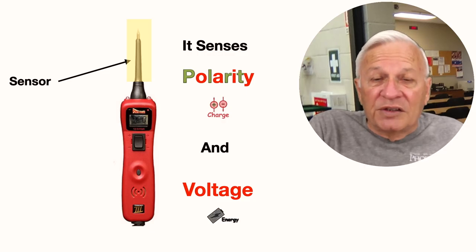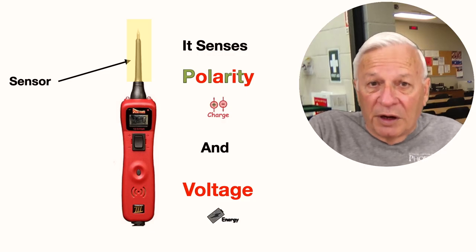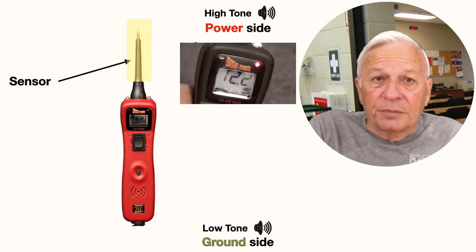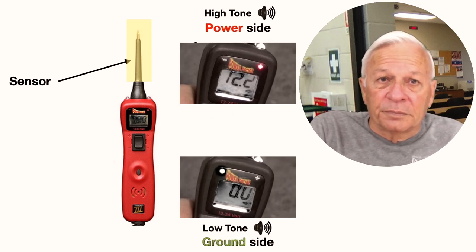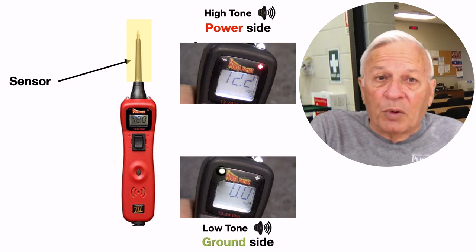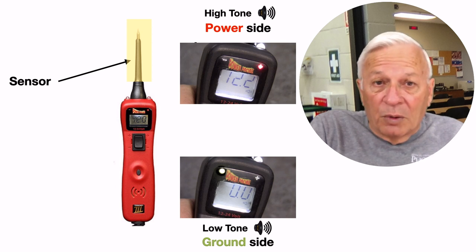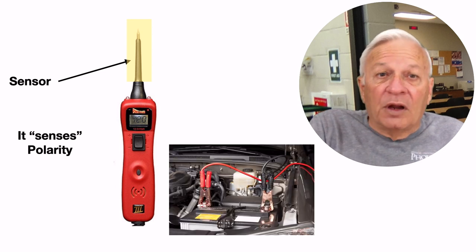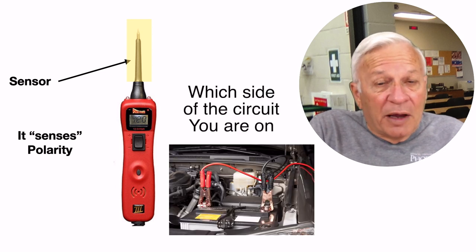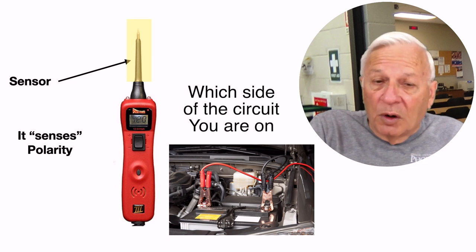Now, as a sensor, it senses two things: polarity and voltage. The polarities are reported by the colored lights, power or ground, and an audible tone. And that tone is different for each pole. In other words, which side of the battery or which side of the circuit you are on, the power side or the ground side.